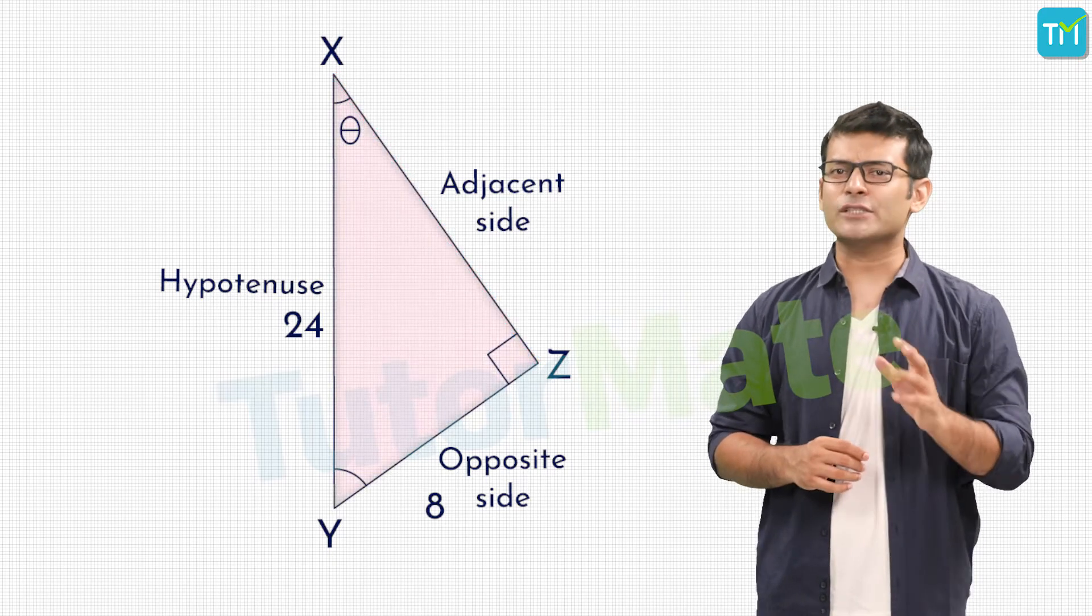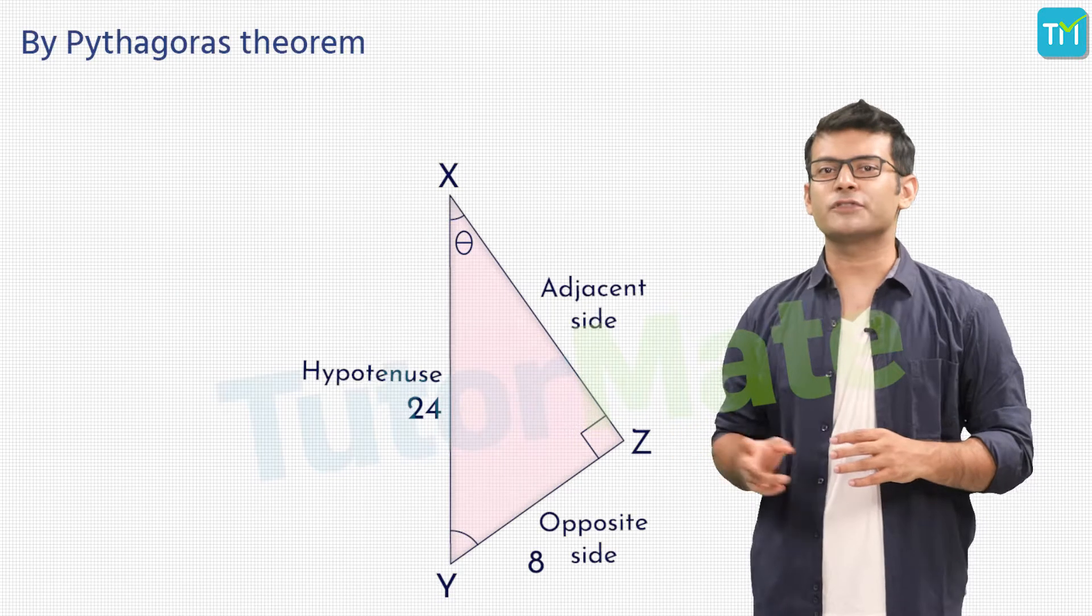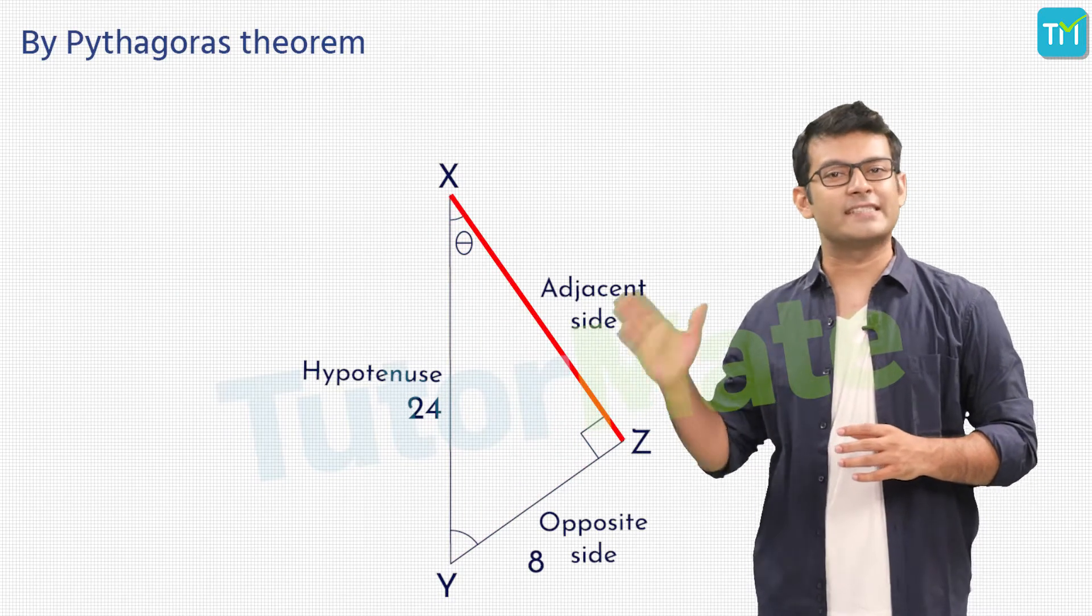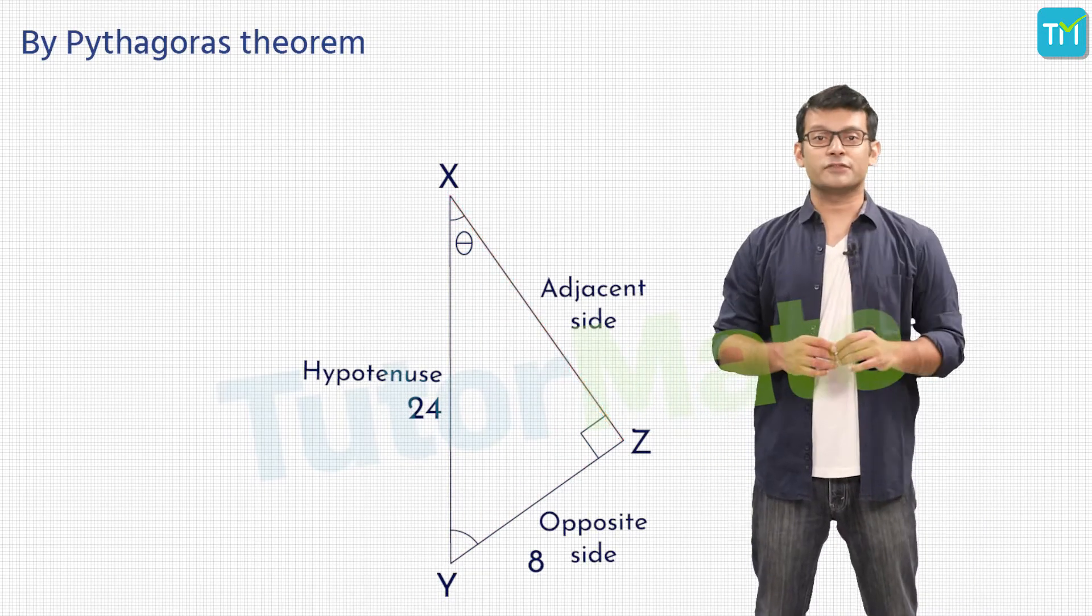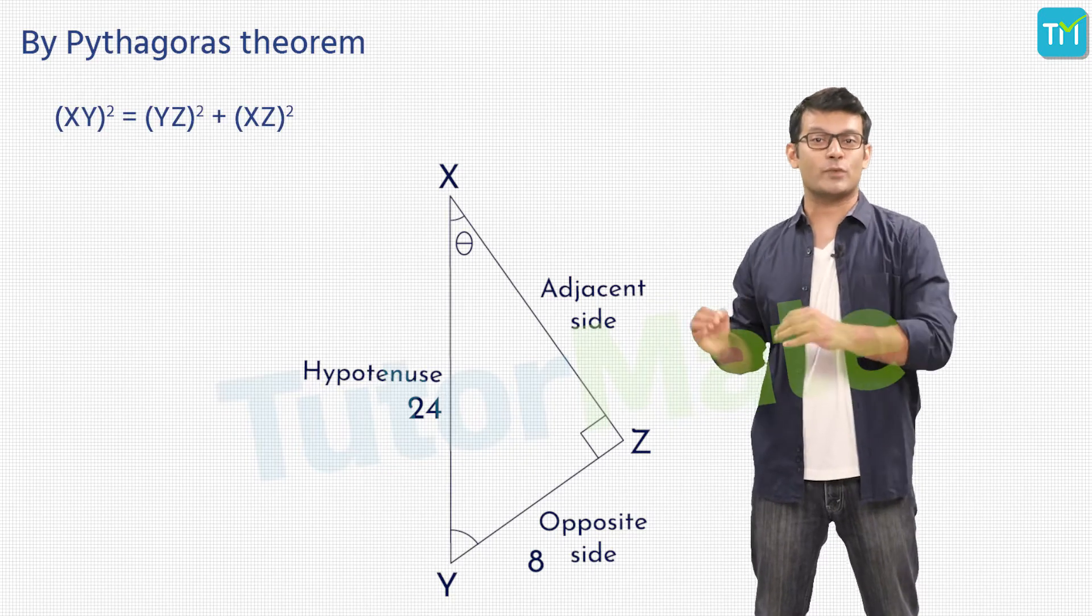Here, we know that XYZ is a right angle triangle. So we can apply the Pythagoras theorem to find the length of XZ. Therefore, by Pythagoras theorem, we will have XY² = YZ² + XZ².